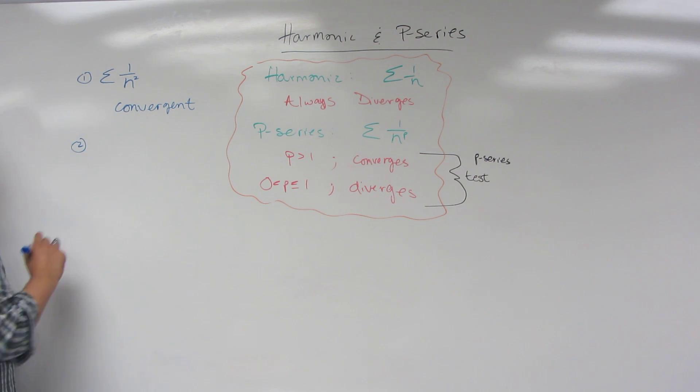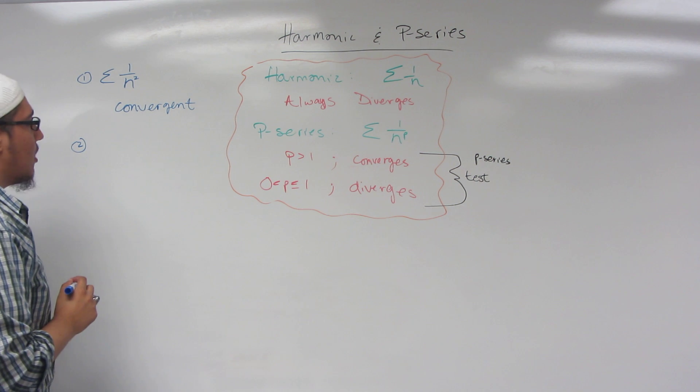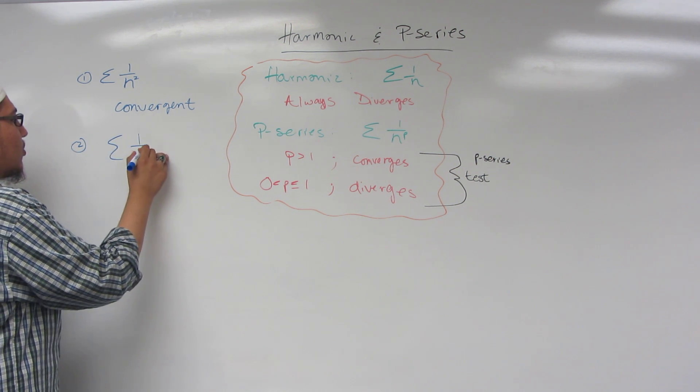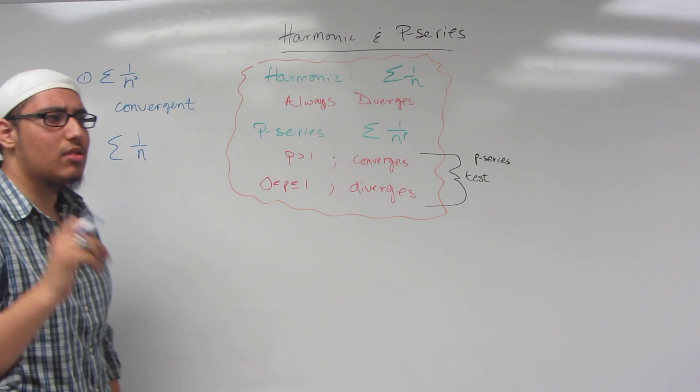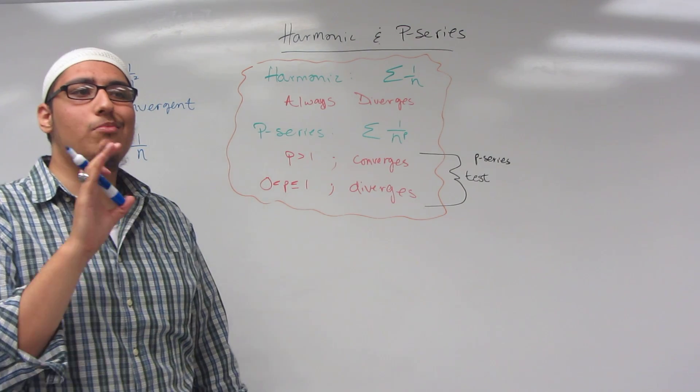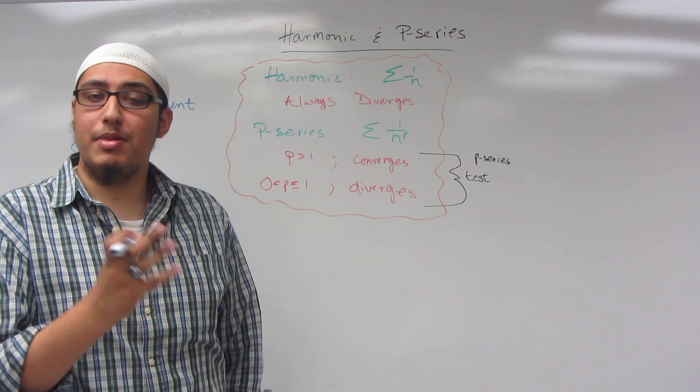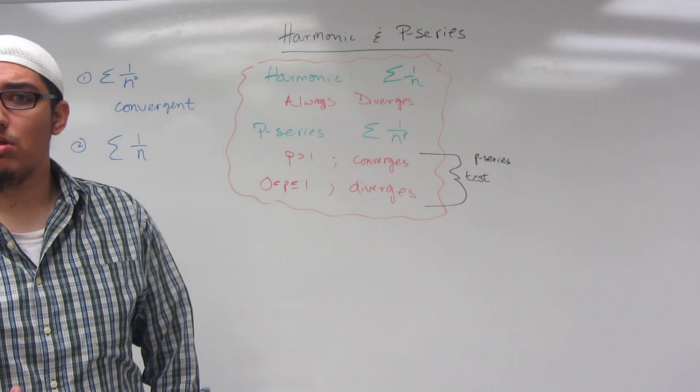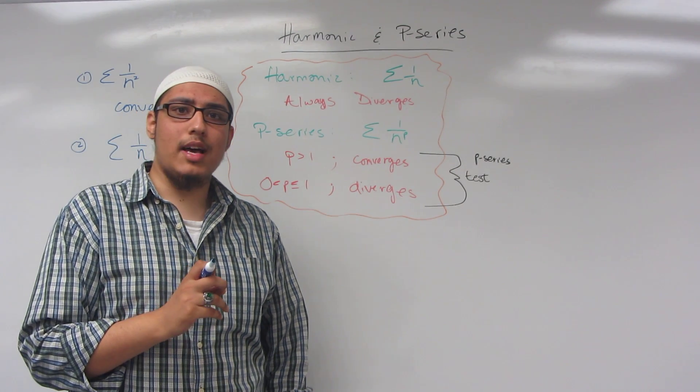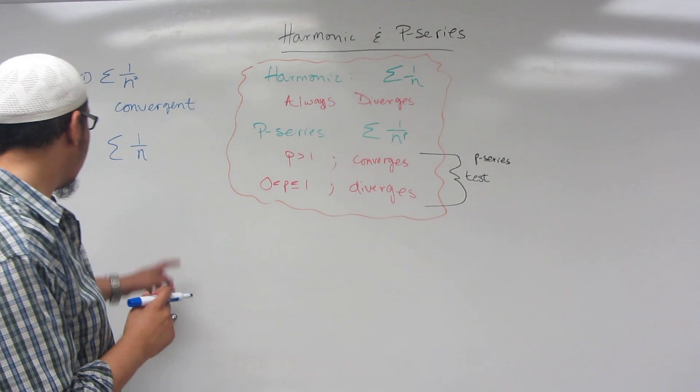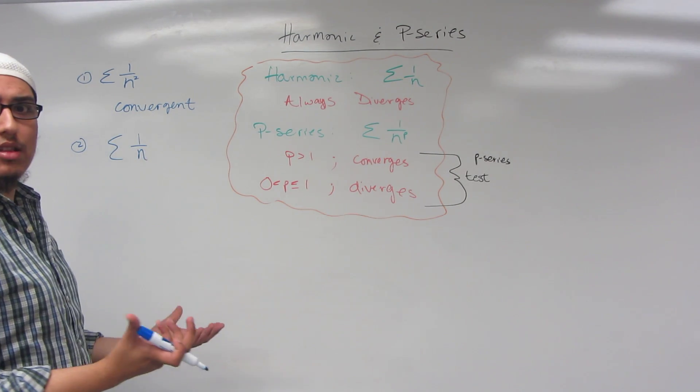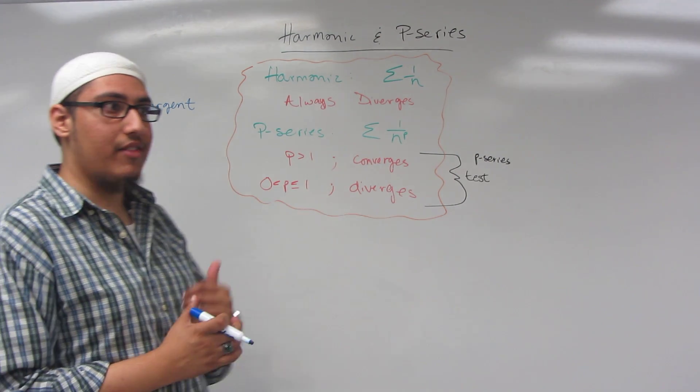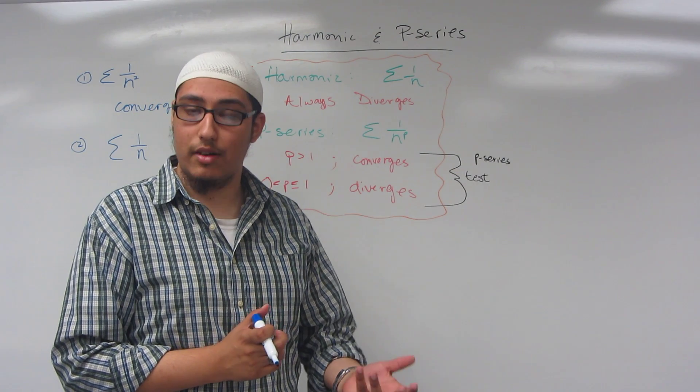Now let's actually look at this one, our harmonic series, 1 over n, right? Well why does it always diverge? Well the harmonic series is actually a p-series. It's just used so commonly in real world applications that mathematicians essentially gave it a name of its own.